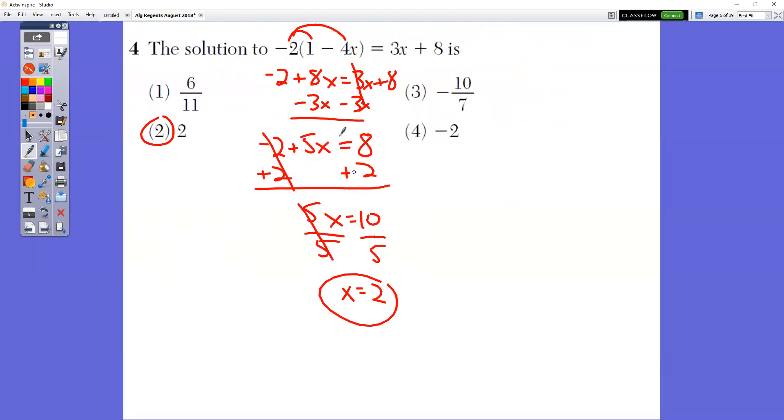In question number four, you're just solving the equation. So you want to do the distributive property first, remembering that a negative times a negative is a positive or plus eight. Go ahead and solve the rest of that. You get x equals two.